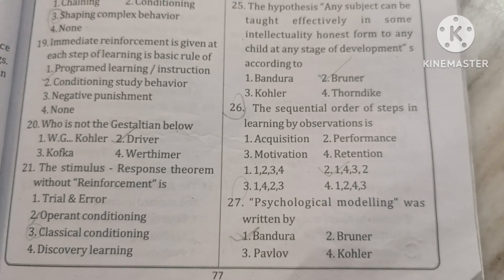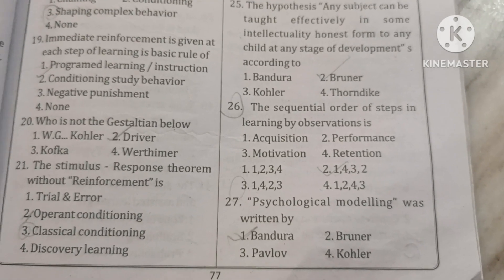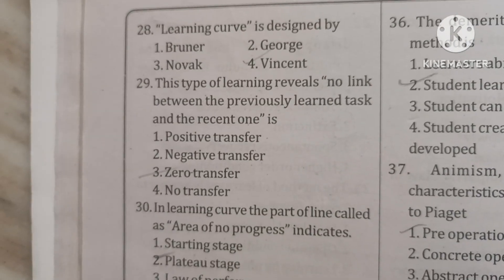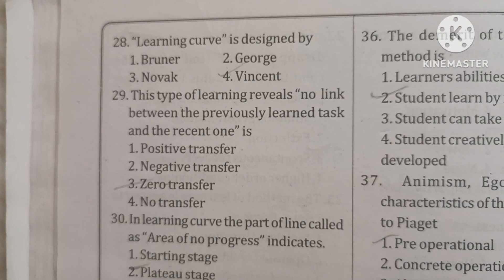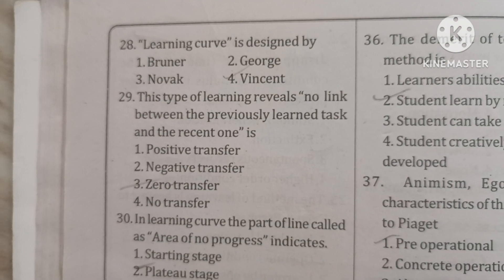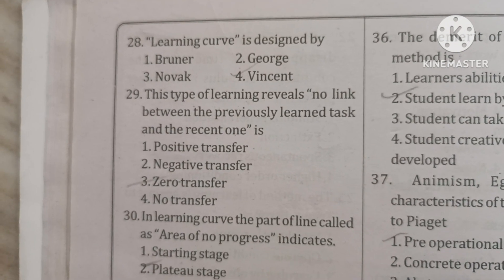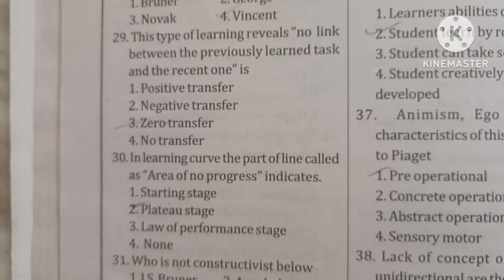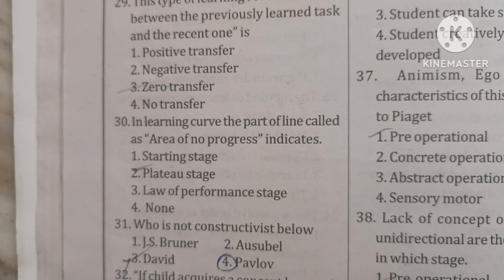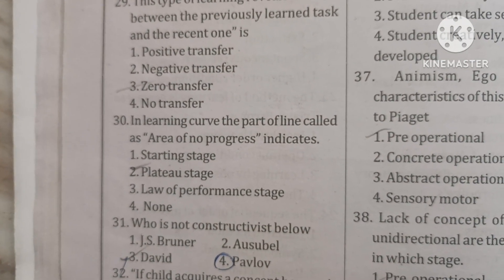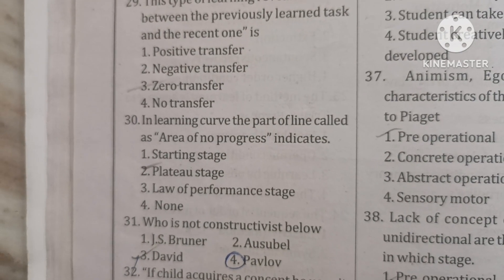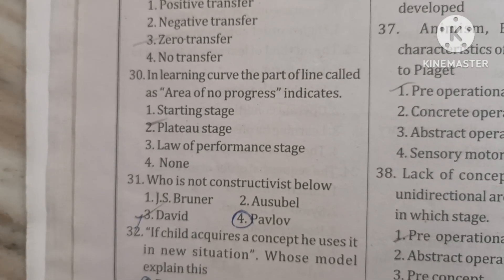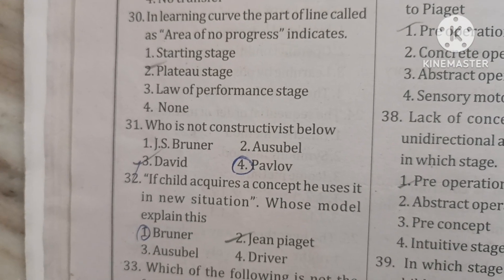Psychological modeling was written by Bandura. Learning curve is designed by Vincent. This type of learning reveals no link between the previously learned task and the recent one — that is zero transfer. In the learning curve, the flat part of the line called the area of no progress indicates the plateau stage.